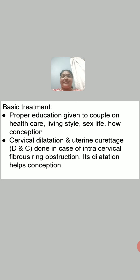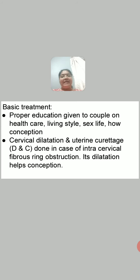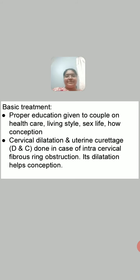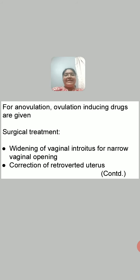If they fail to conceive, cervical dilatation and uterine curettage — simply called D&C — is done in case of intracervical fibrous ring obstruction. Dilatation of the cervical canal helps in conception. If the menstrual cycle is anovulatory, ovulation-inducing drugs are given.